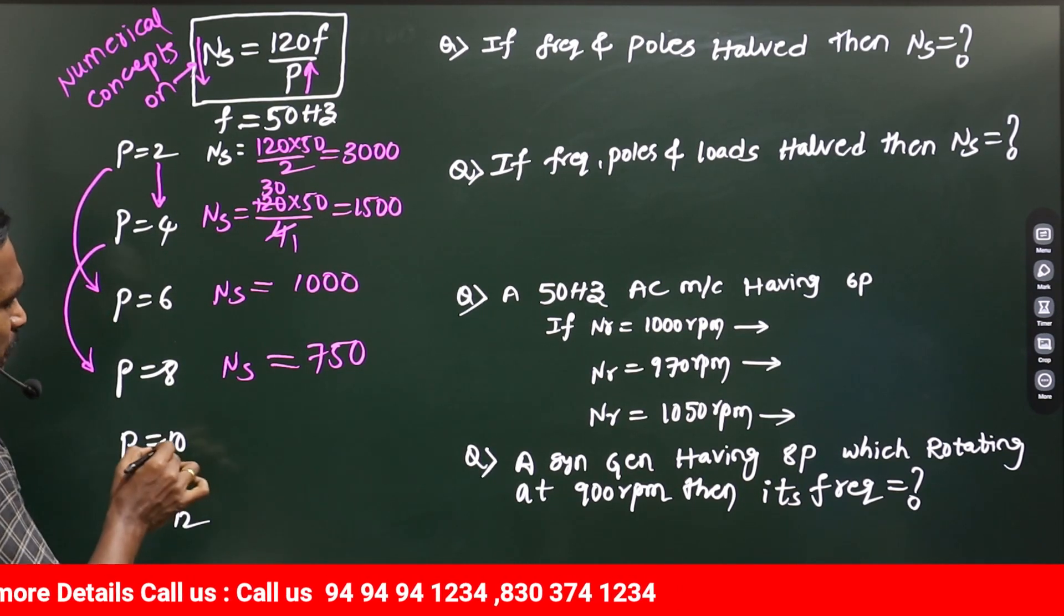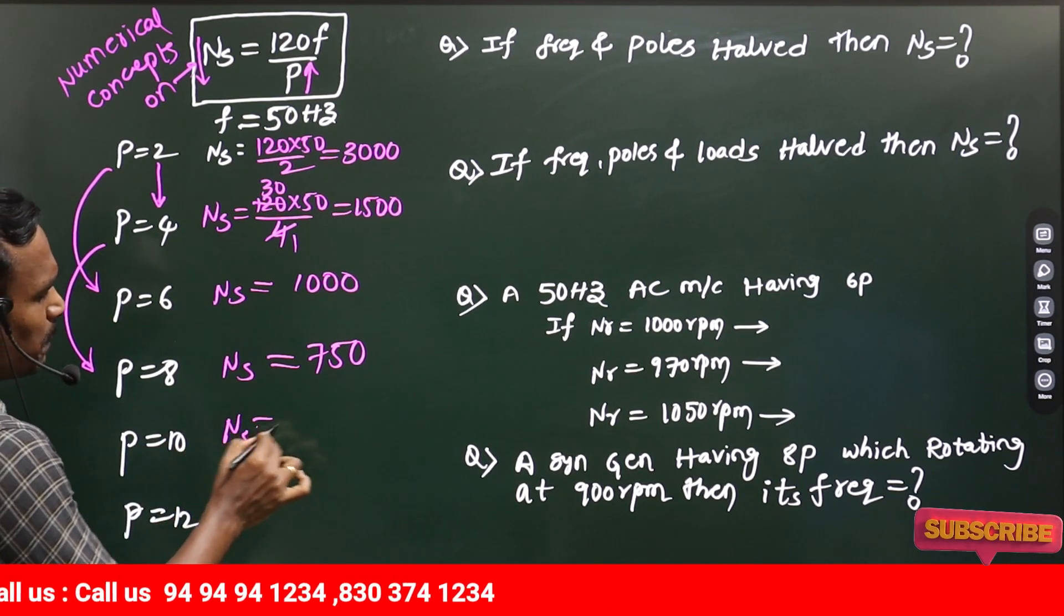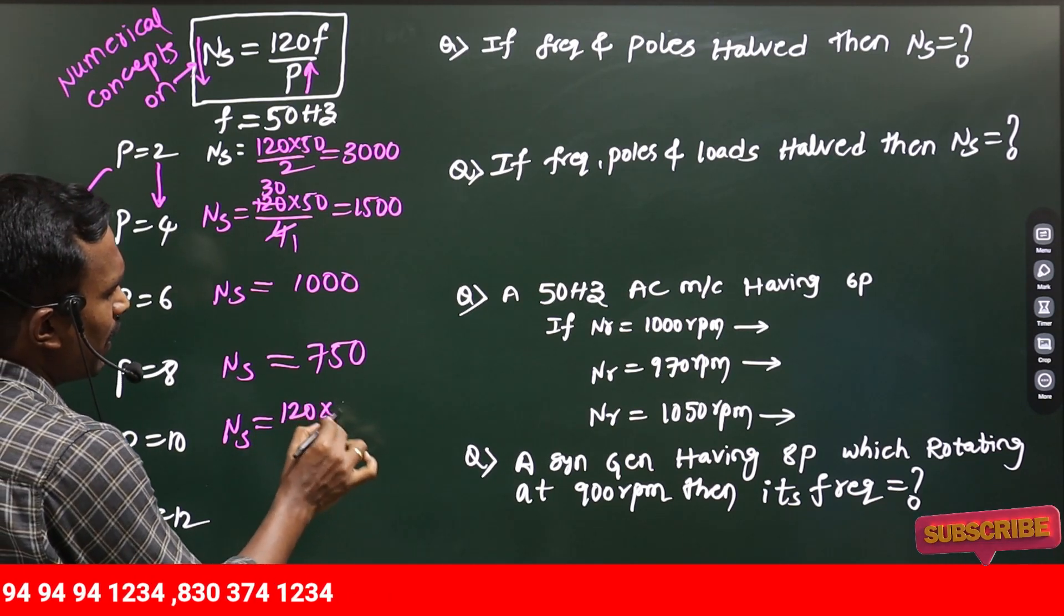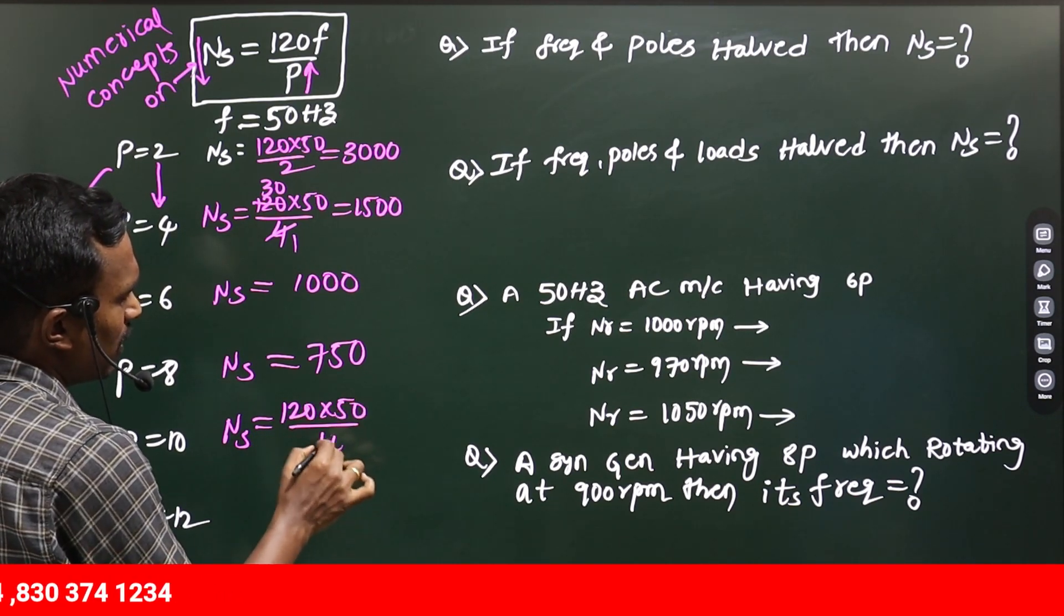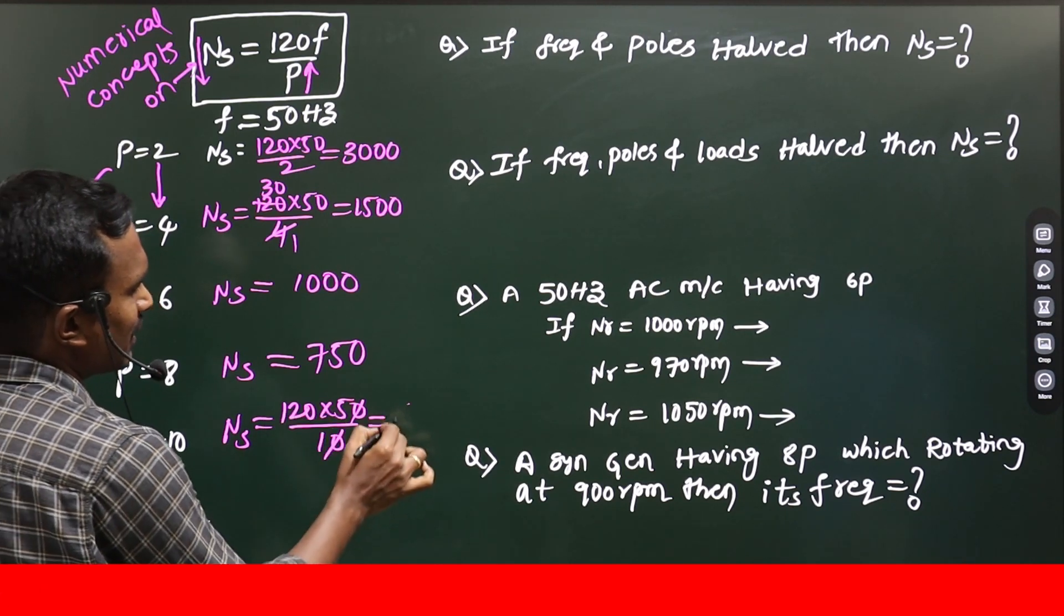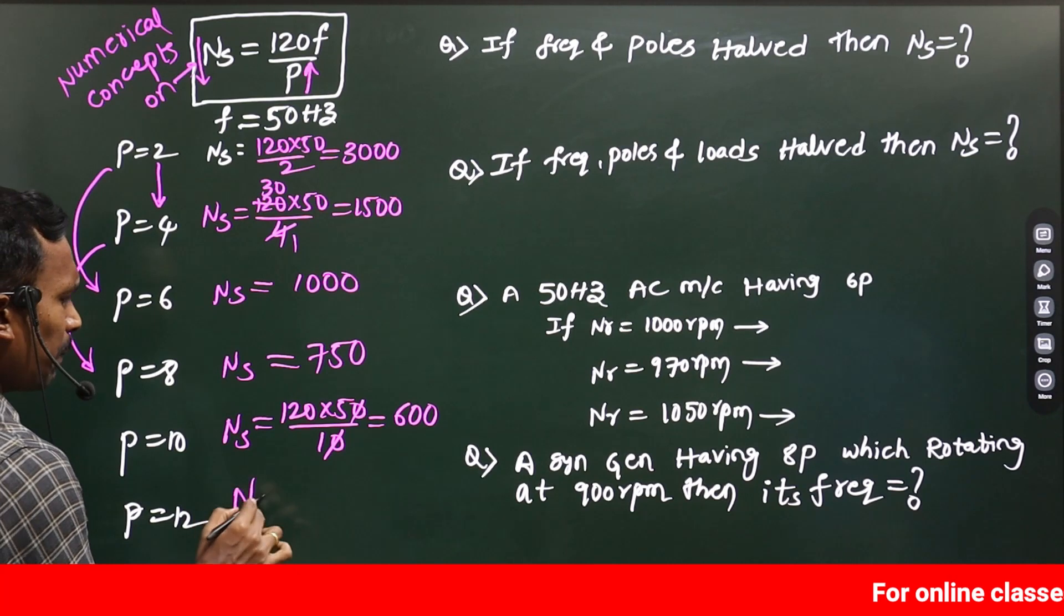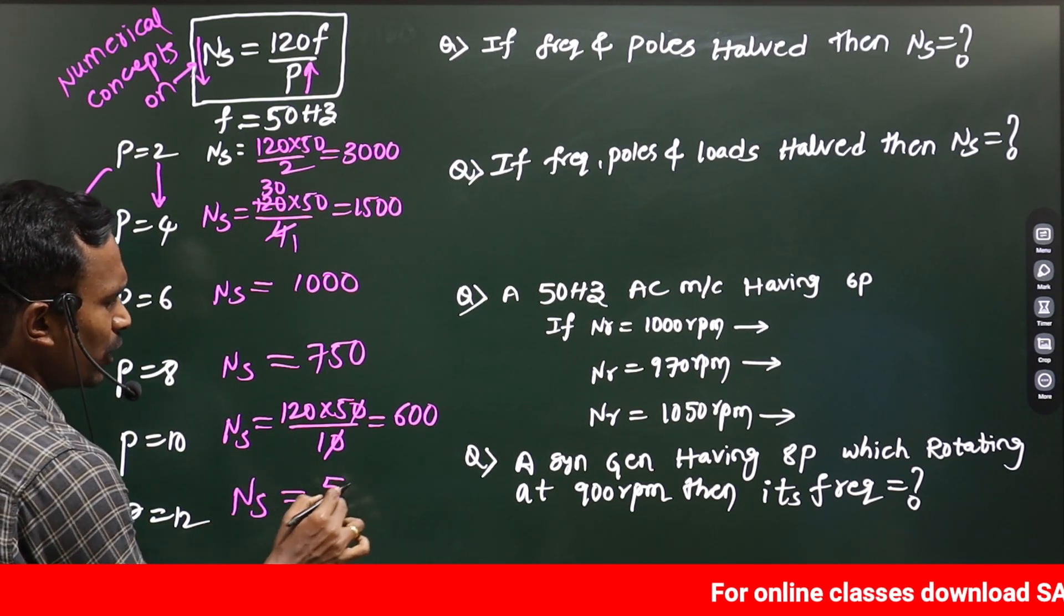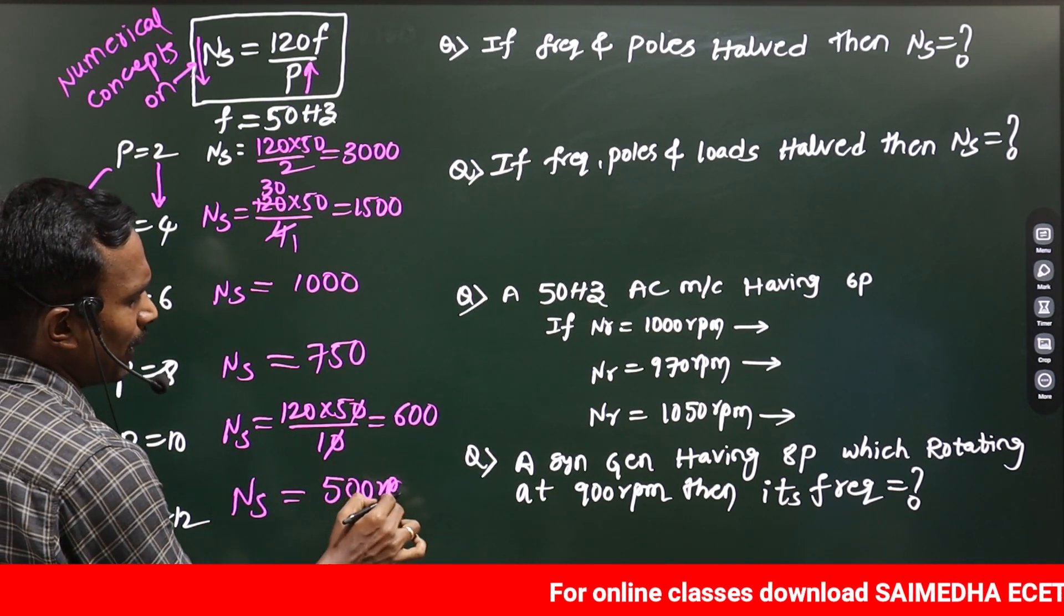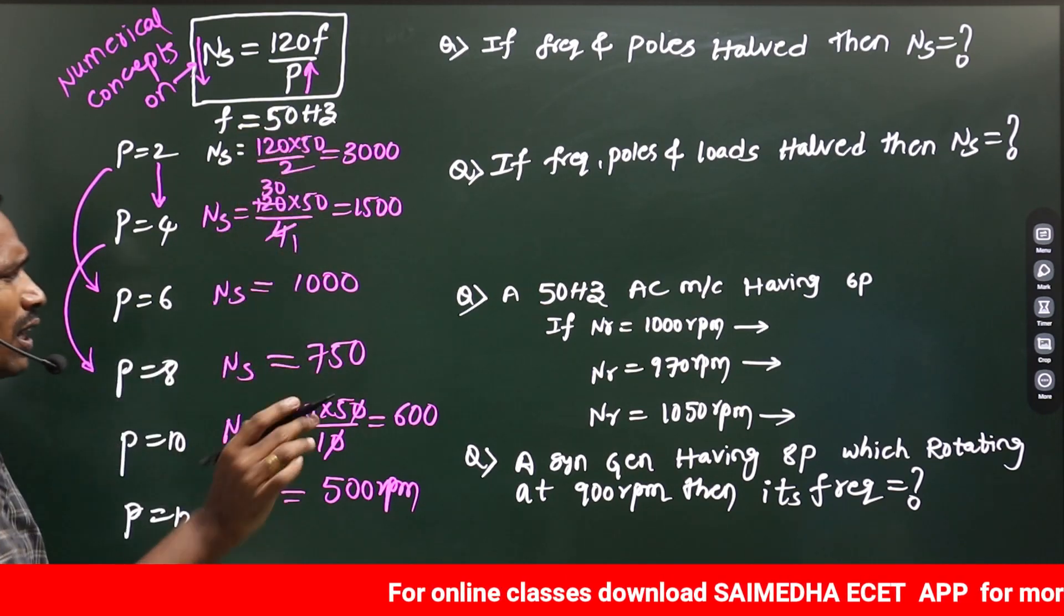If the number of poles is 10, then the synchronous speed 120F by P, zeros cancel, 5 into 12 is 60, 600 RPM. For 12 pole, if you calculate, you can get 500 RPM. Like that, you need to know all these.